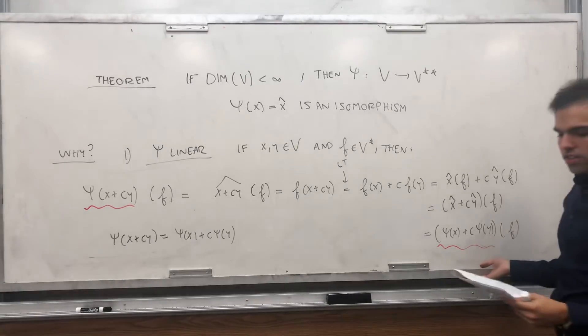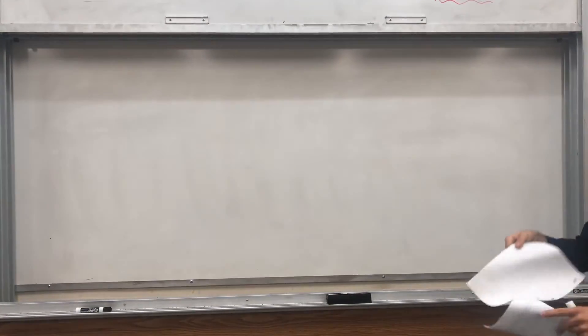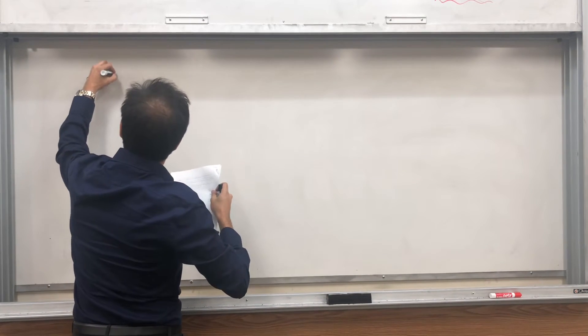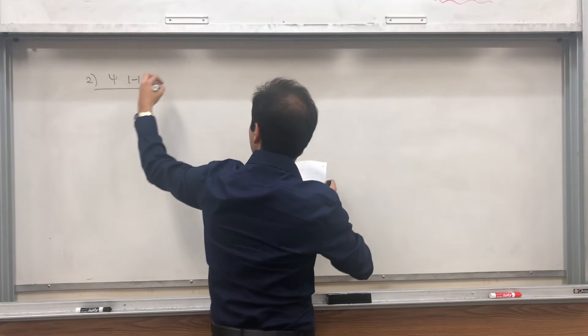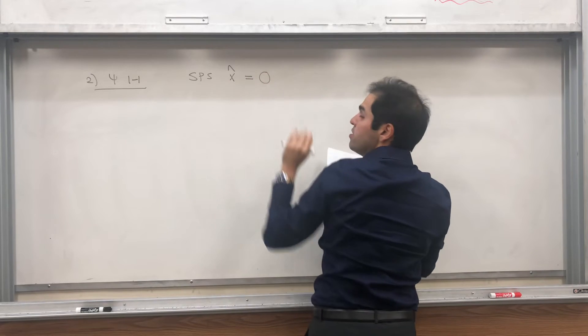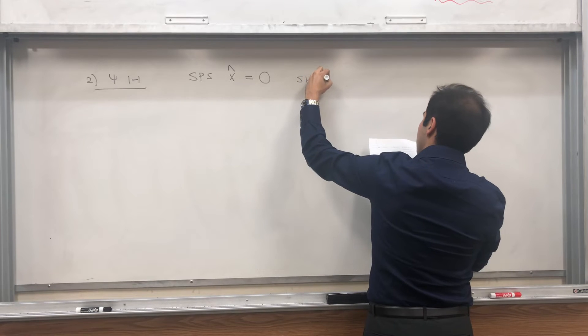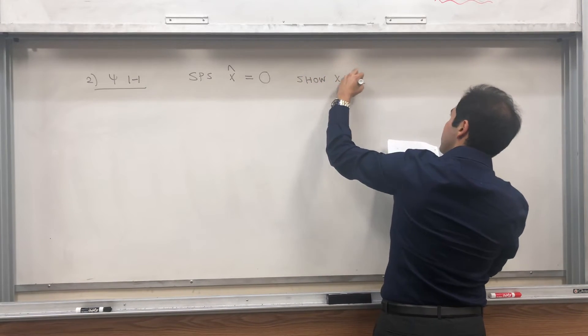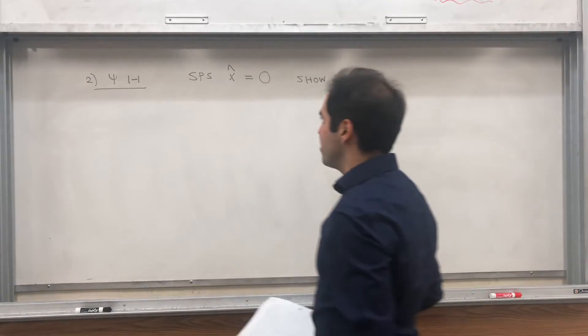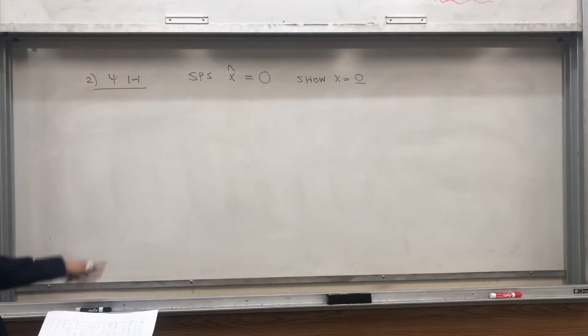So what do we have? This weird thing applied to F equals this weird thing applied to F. Since F is arbitrary, we do get that it's linear. Psi of x plus cy equals Psi of x plus c Psi of y. So it is linear. And also, let's show it's 1 to 1. So I have a nice proof of this. So Psi 1 to 1. So the proof is, suppose x hat equals to the zero function, if you want, the zero functional, and show x equals to the zero vector. And for this one, let me, because it's finite dimensional, and because it might not always be true in infinite dimensions, let's use a basis.